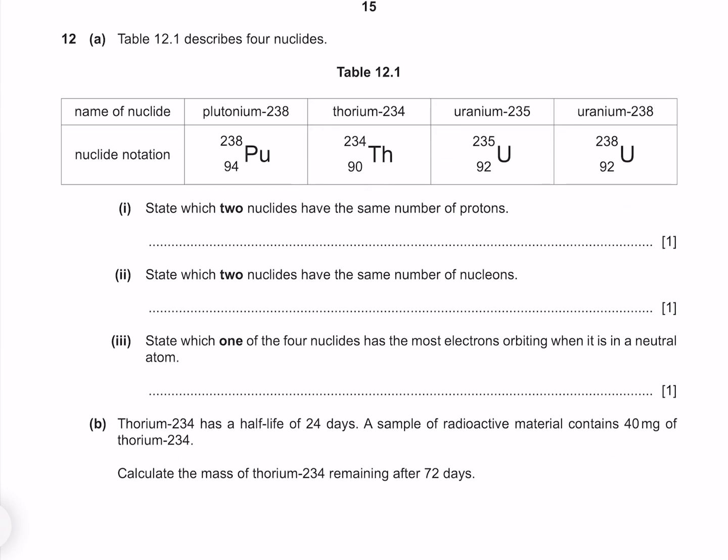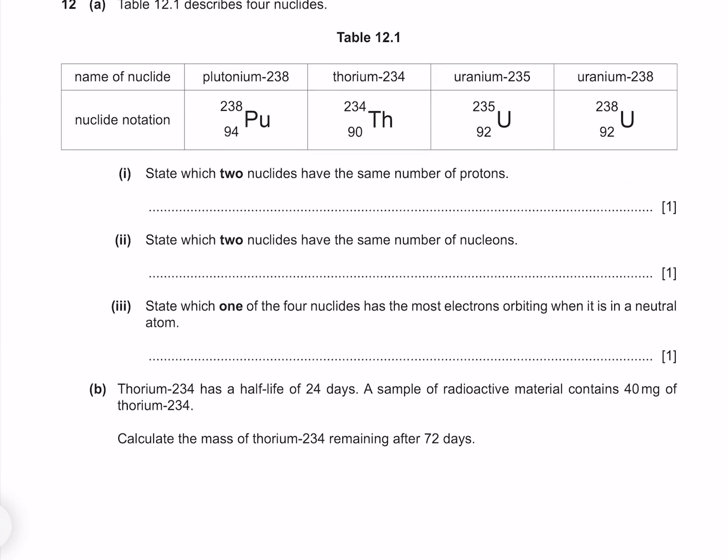Table 12.1 describes four nuclides. State which two nuclides have the same amount of protons. The amount of protons is given by the atomic number. Our atomic number is the smaller of the two. Of all the options, we see that these two are the same, which makes sense as they're both uranium. If they were a different element, then they would have to have a different amount of protons.